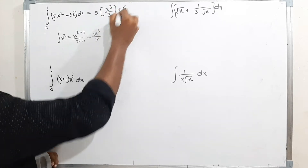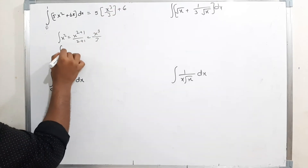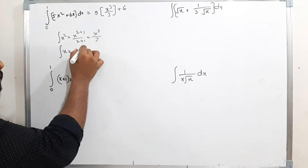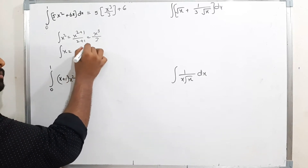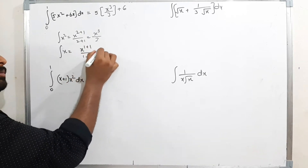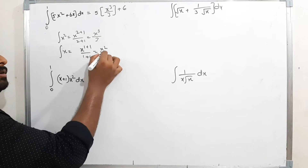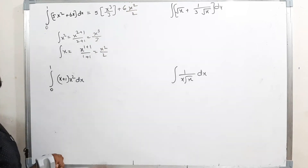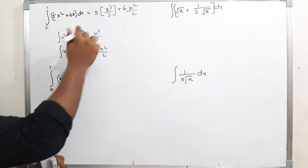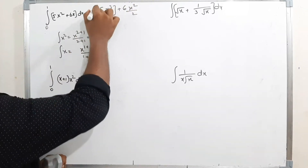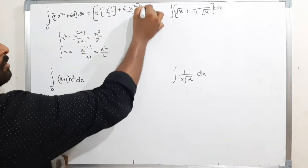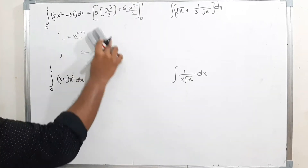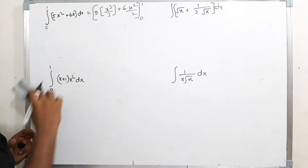The integration of x is x^(1+1)/(1+1), which is x²/2. So we get 6x²/2. Now our limits are from 0 to 1. Applying the limits, we keep the limits in the expression.